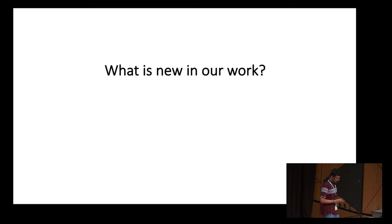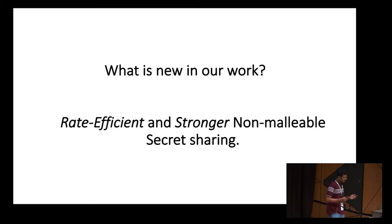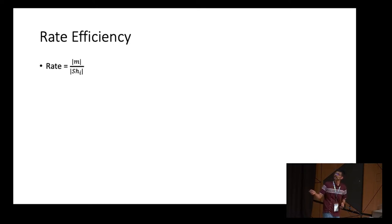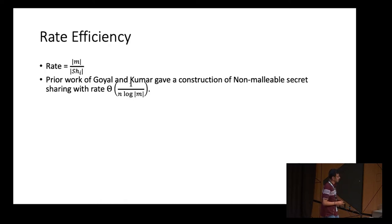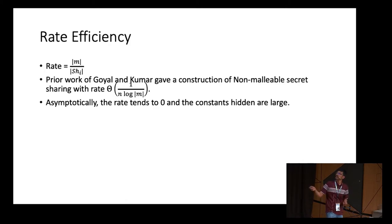What is new in this work? We give rate-efficient and stronger constructions of non-malleable secret sharing. The rate of a secret sharing scheme is defined as the ratio between the size of the secret message and the size of a share — the main parameter determining efficiency. The prior work of Goyal and Kumar gave a construction with rate growing as 1 over N log M, where N is the number of parties and M is the size of the secret. Asymptotically this rate tends to zero, and the constants hidden in the big-theta notation are also large, so it's not concretely efficient.